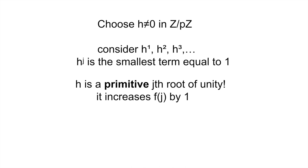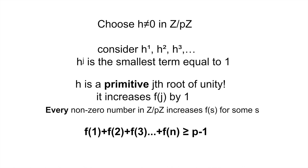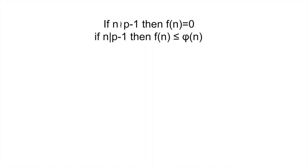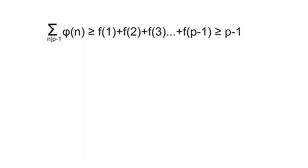In fact, every non-zero number in Z over pZ contributes to f of s for some s, and so therefore, f of 1 plus f of 2 all the way up to f of p minus 1 must be greater than or equal to p minus 1. We know that f of n is equal to 0 if n does not divide p minus 1 by Lagrange's theorem from earlier. If n does divide p minus 1, we showed that we have f of n is less than or equal to phi of n. So, therefore, the sum over divisors of p minus 1 of phi of n is greater than or equal to f of 1 plus f of 2 plus f of 3 all the way up to f of p minus 1, which in turn is greater than or equal to p minus 1.